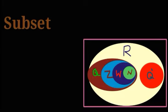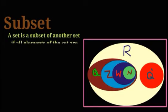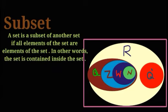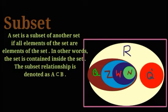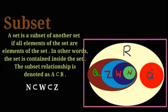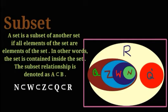A subset: a set is a subset of another set if all elements of the set are also elements of the other set. In other words, the set is contained inside the other set. The subset relationship is denoted as A ⊆ B. For example: N ⊆ W, W ⊆ Z, Z ⊆ Q, Q ⊆ R, and Q' ⊆ R.